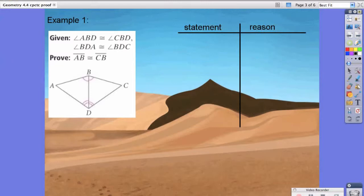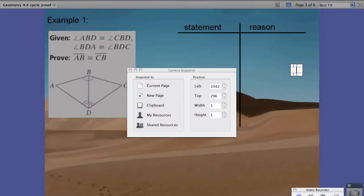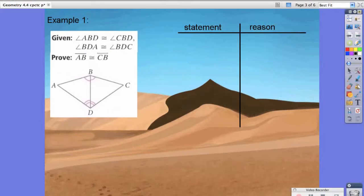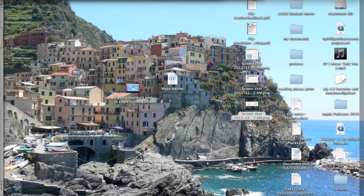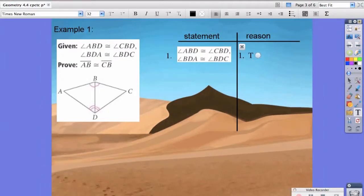Let's start with example one. Given angle ABD is congruent to angle CBD and angle BDA is congruent to angle BDC, we're supposed to prove that AB and CB are congruent. So, we're going to take a quick picture of our given statement. Step one, and this is given.